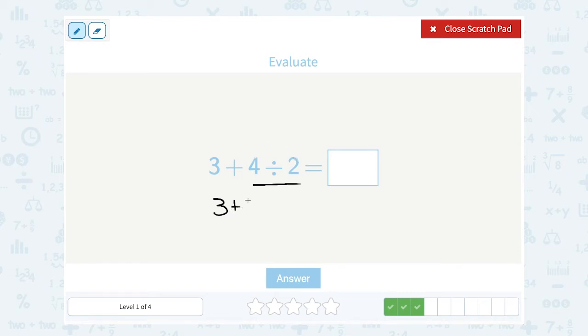Well, 4 divided by 2 is just 2, and now I can add 3 plus 2. That gives me 5.